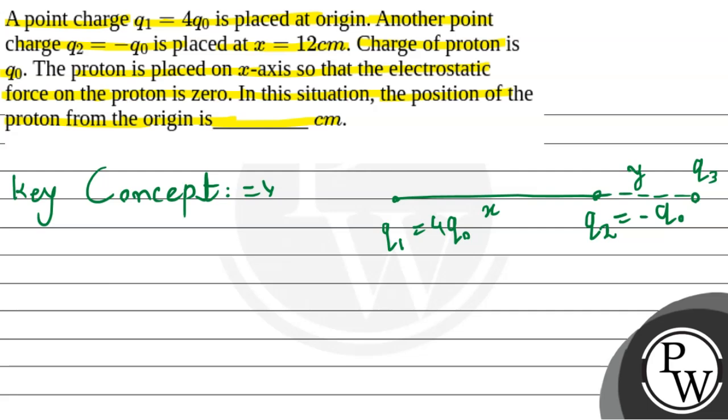Since we have the electrostatic force on proton as zero, we need to use the electrostatic force formula. This can be given by the formula: K times Q1 Q2 divided by R square, where R is the distance between the two point charges, which are Q1 and Q2.